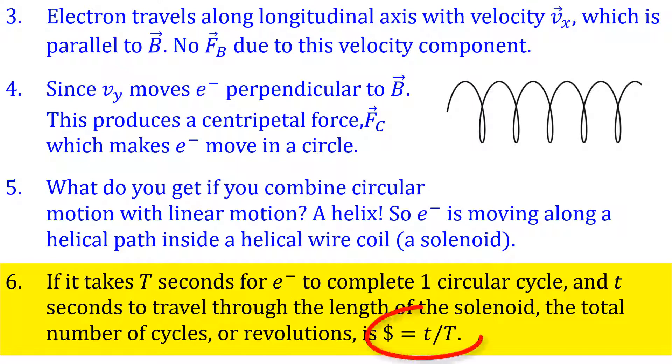Number six is what we're looking for. I need to figure out how much time it takes the electron to complete one circular orbit, and how long it takes the electron to move from one end of the solenoid through to the other end, and then calculate the number of circular revolutions the electron completes by the time it's reached the end of the solenoid.